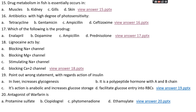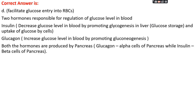Question number nineteen: identify the wrong statement regarding the action of insulin. Option A: insulin increases glycogenesis in the liver; option B: insulin is a polypeptide hormone with A and B chains; option C: insulin's action is anabolic and increases glucose storage; or option D: insulin facilitates glucose entry into RBCs. The right answer is option D — insulin does not facilitate glucose entry into RBCs.